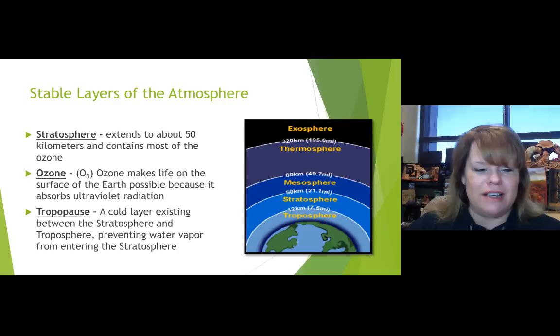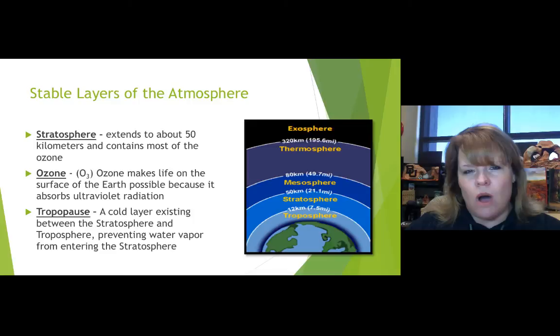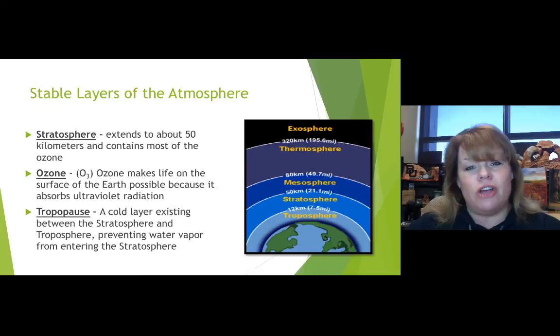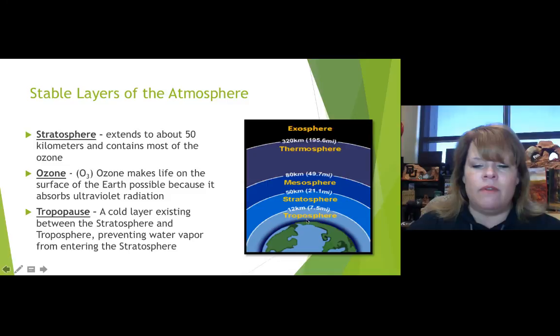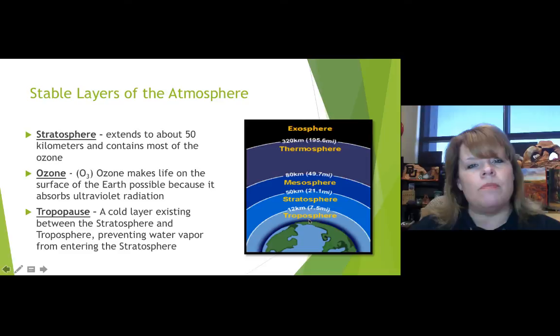The tropopause is a cold layer — not a warm layer — that exists between the stratosphere and the troposphere, preventing water vapor from entering the stratosphere. Water vapor is actually one of the most important greenhouse gases that people don't talk about, because it absorbs a lot of heat. We don't want anything water-vapor-like from the troposphere getting into the stratosphere because that would warm it up in a way we don't need.